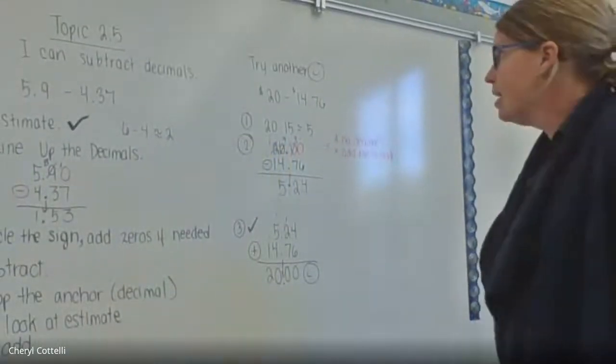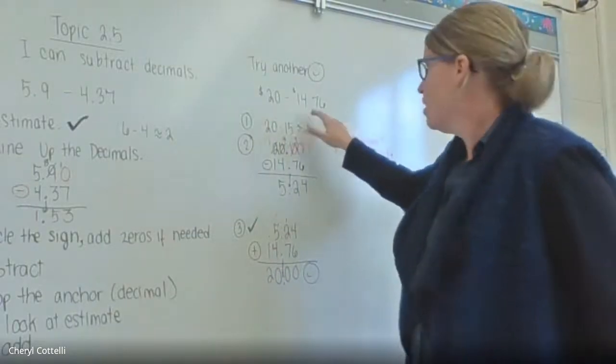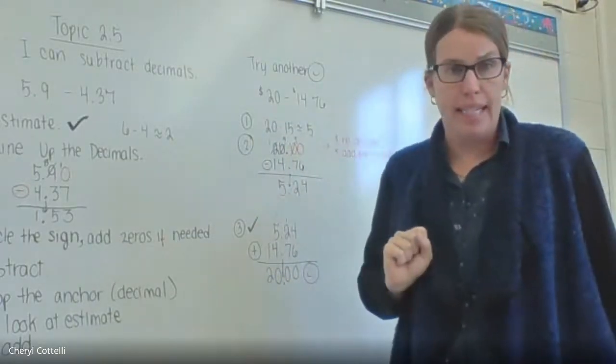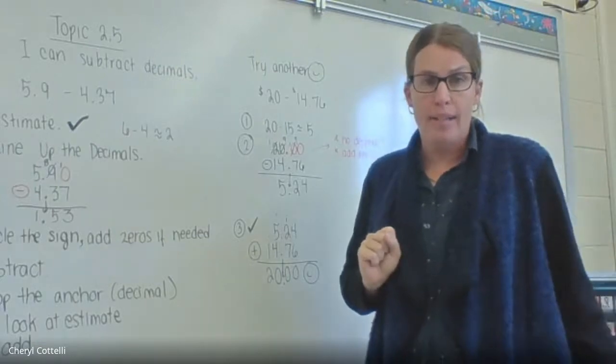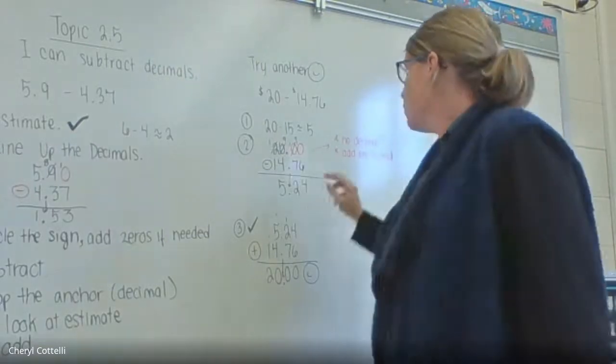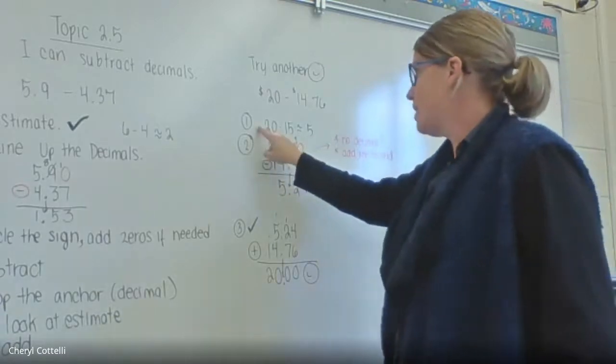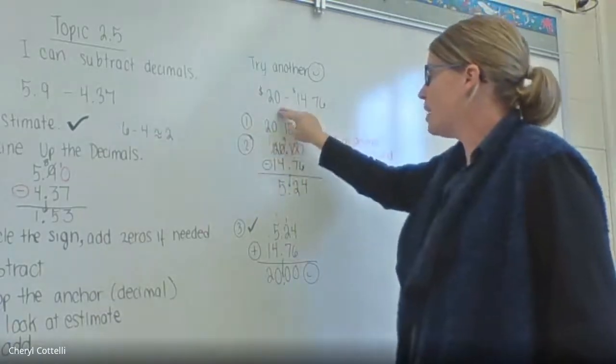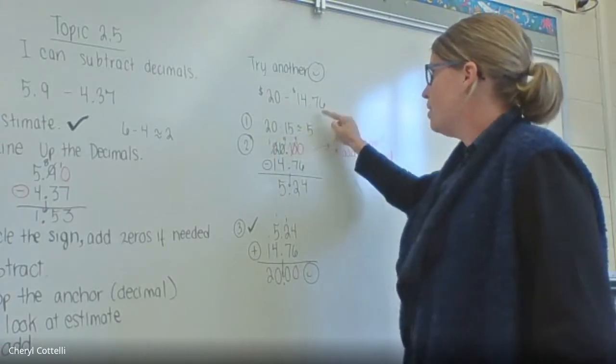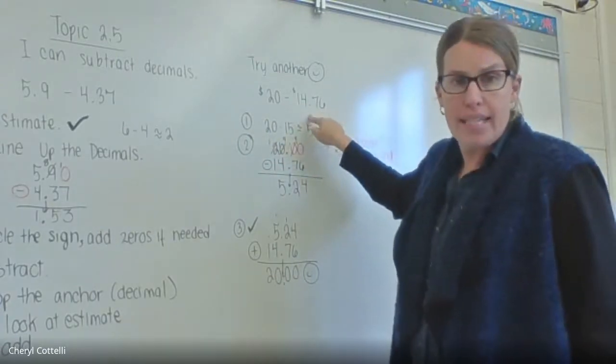Twenty dollars minus fourteen dollars and seventy-six cents. Now on the twenty dollars there's no decimal, so what we have to do is we have to add a decimal. But first we're going to estimate. Step one is to estimate. So twenty dollars rounds to twenty dollars, 14.76 is close to fifteen dollars.